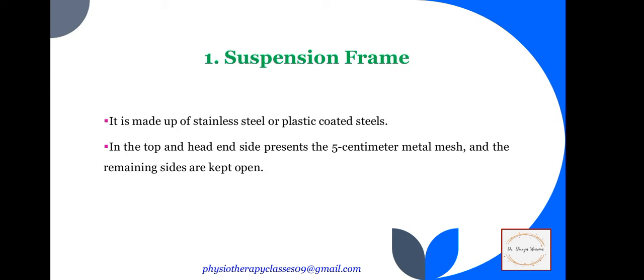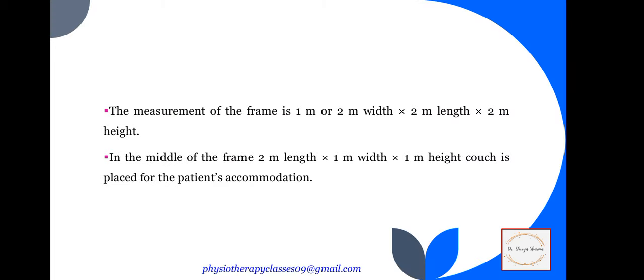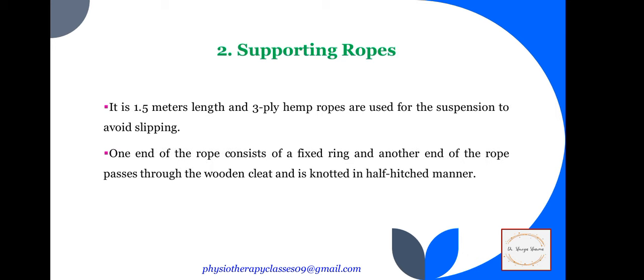The first is the suspension frame. It is made up of stainless steel or plastic-coated steel. At the top and head end, the side presents a 5 cm metal mesh, and the remaining sides are kept open. The measurement is 1–2 meters width by 2 meters length by 2 meters height. In the middle of the frame, a couch of 2×1×1 meters is placed for patient accommodation.